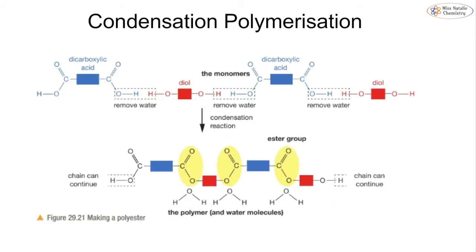This is shown more clearly with colour coding: carboxylic acids in blue and alcohols in red. The boxes represent any group — any number of carbons or hydrogens in the centre. What is inside the boxes has no effect on the actual reaction; it only affects what polymer you're making. To keep it simple, we draw a box and focus purely on the functional groups.